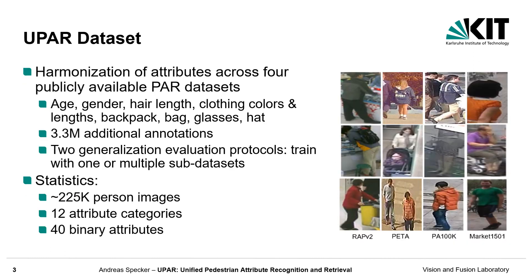We address this topic by harmonizing 40 binary attributes belonging to 12 categories across four publicly available datasets. Sampled images from the datasets are shown on the right. The attributes include global attributes like gender or age, but also clothing, colors, or accessories. In total, we contribute more than 3 million additional annotations.